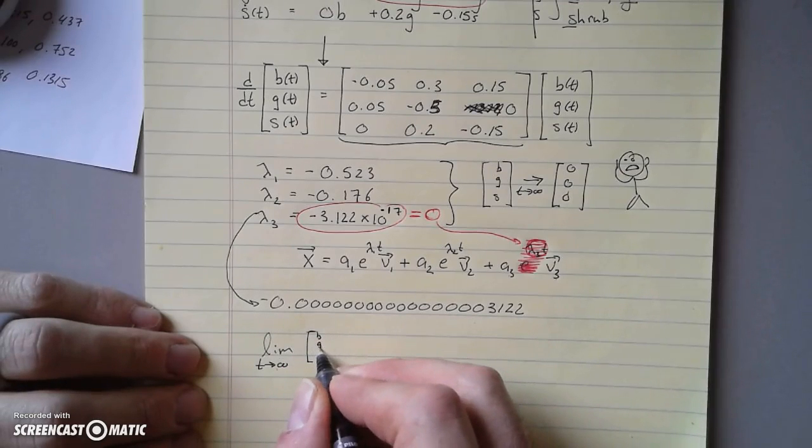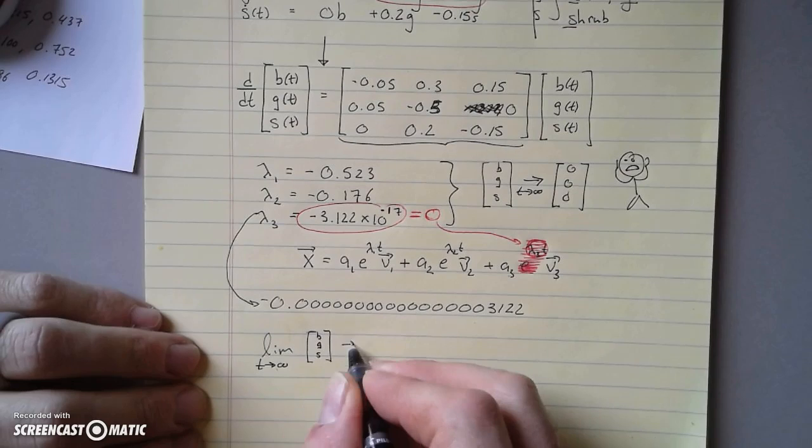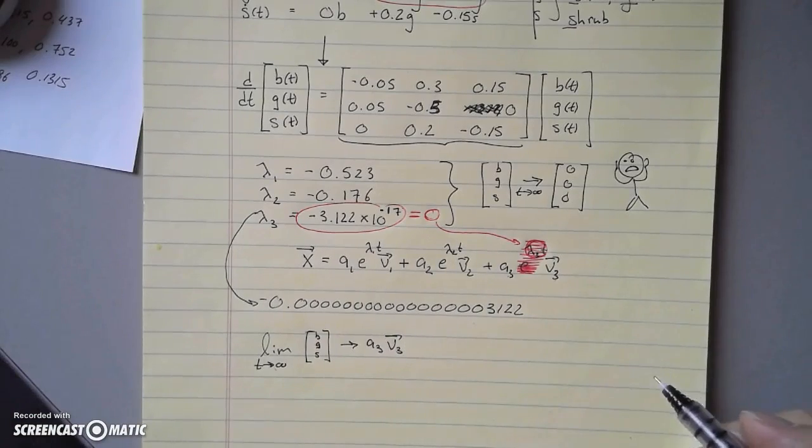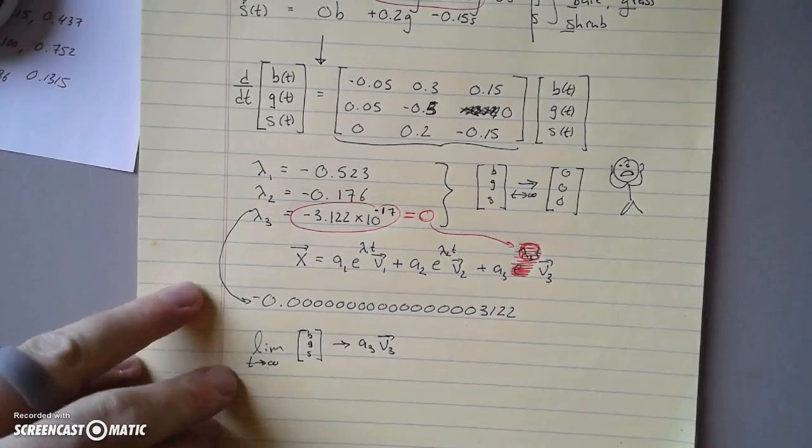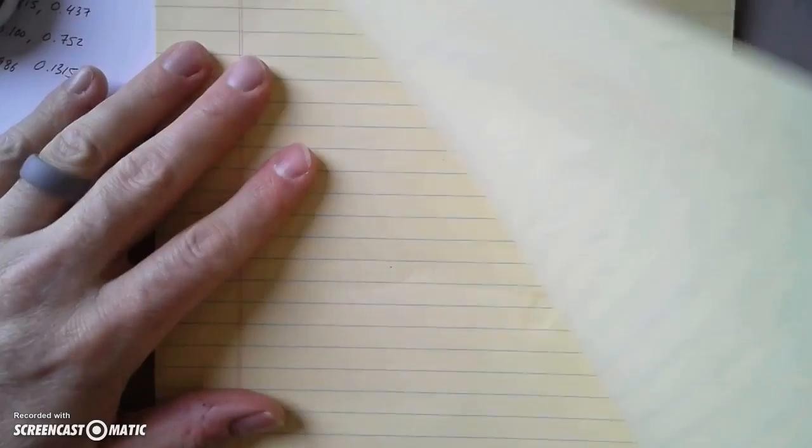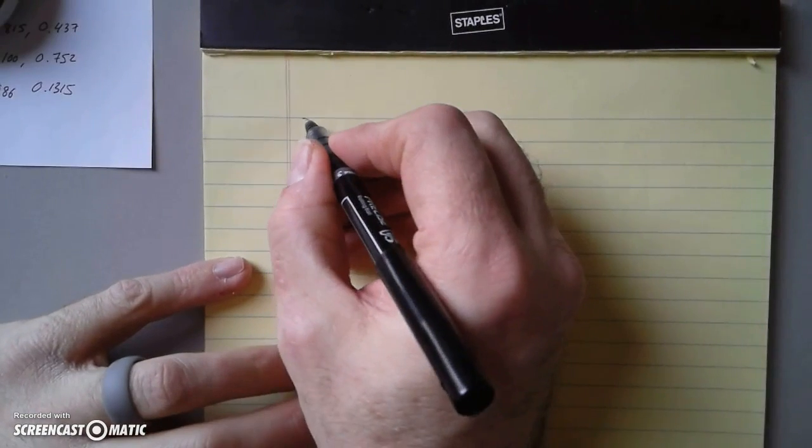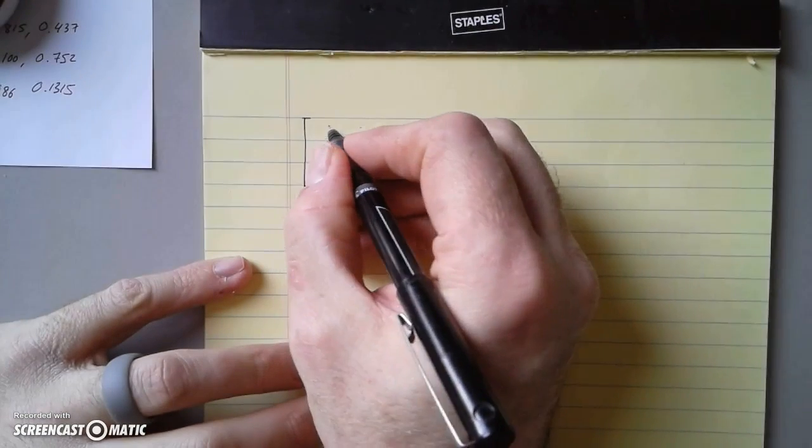This is going to go towards a3 times v3. We just have to find out what this is. To do that, what do we do? We need our initial condition.